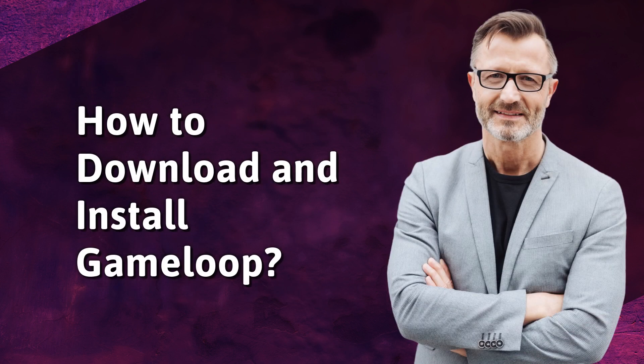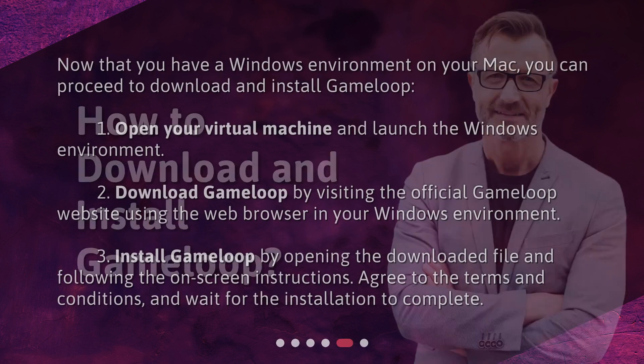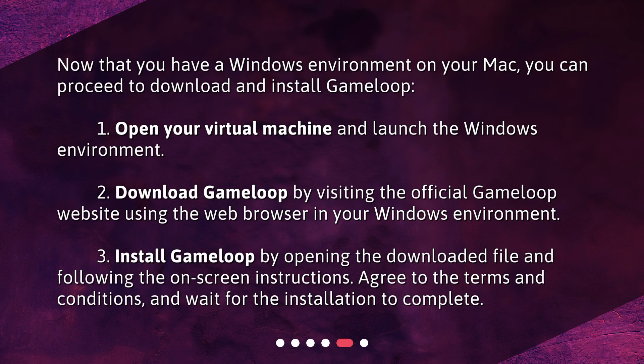How to download and install GameLoop? Now that you have a Windows environment on your Mac, you can proceed to download and install GameLoop. Step 1: Open your virtual machine and launch the Windows environment. Step 2: Download GameLoop by visiting the official GameLoop website using the web browser in your Windows environment. Step 3: Install GameLoop by opening the downloaded file and following the on-screen instructions. Agree to the terms and conditions and wait for the installation to complete.